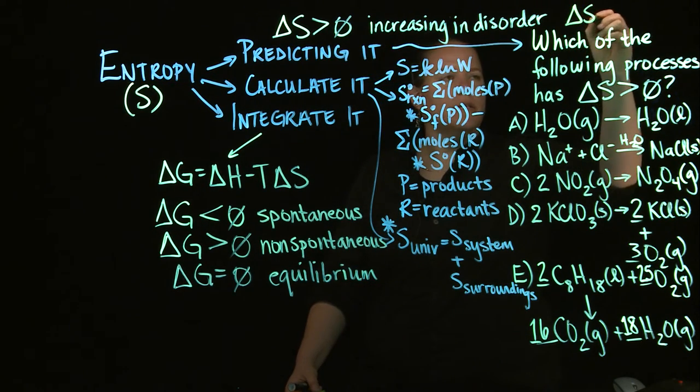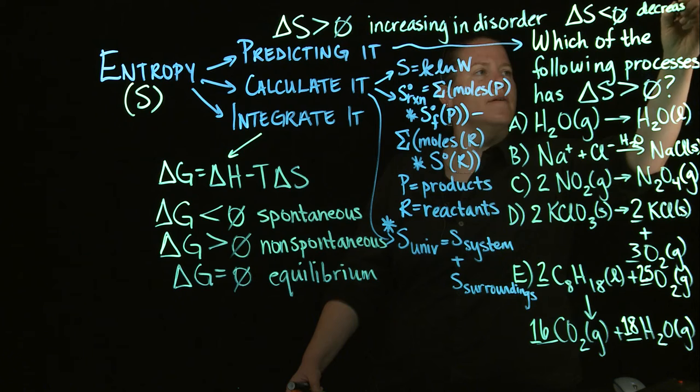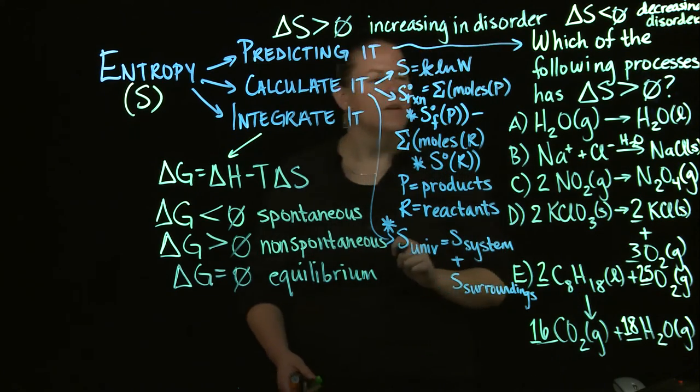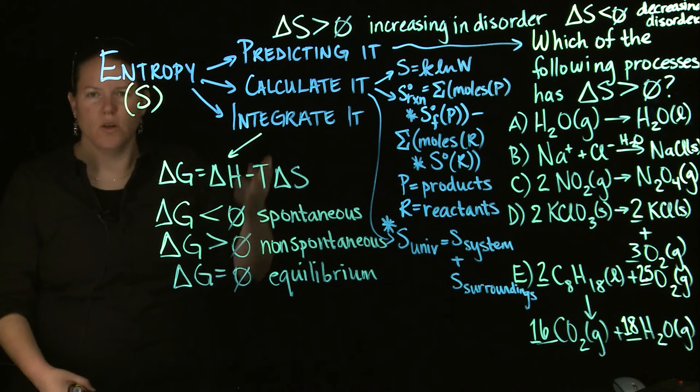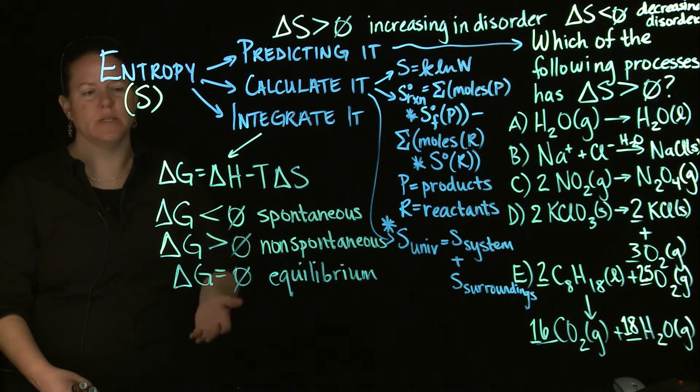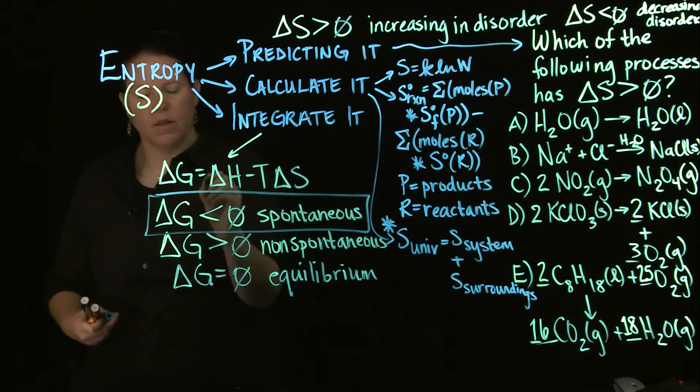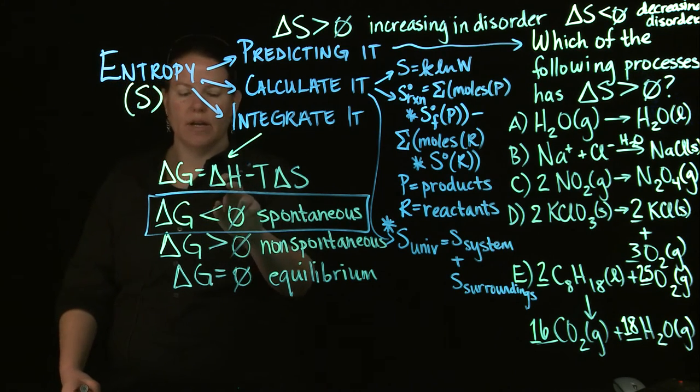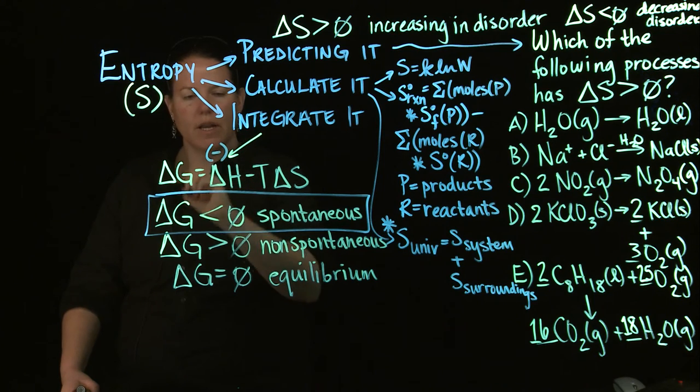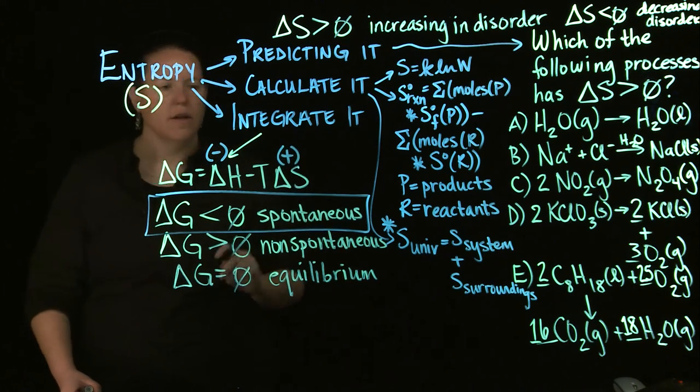Delta S as less than zero means that it's decreasing in disorder of the system. So what does that mean? What that means is that generally you have a gut level reaction of where you want these values to be. You generally want delta G to be less than zero because that would mean your reaction is spontaneous.